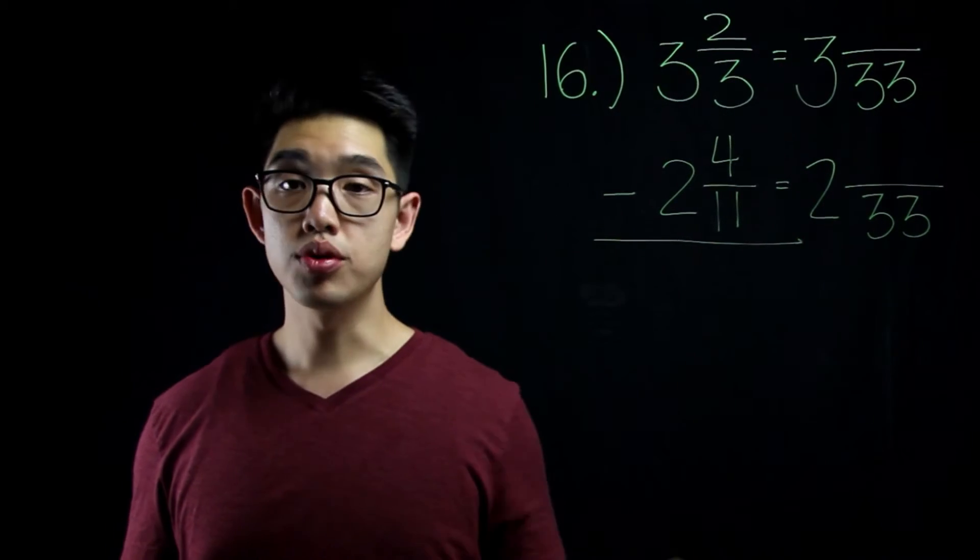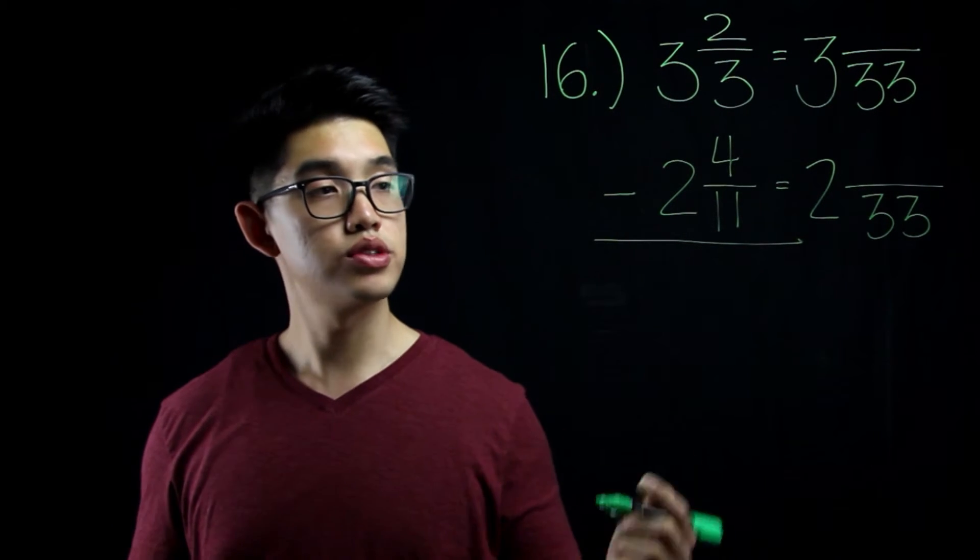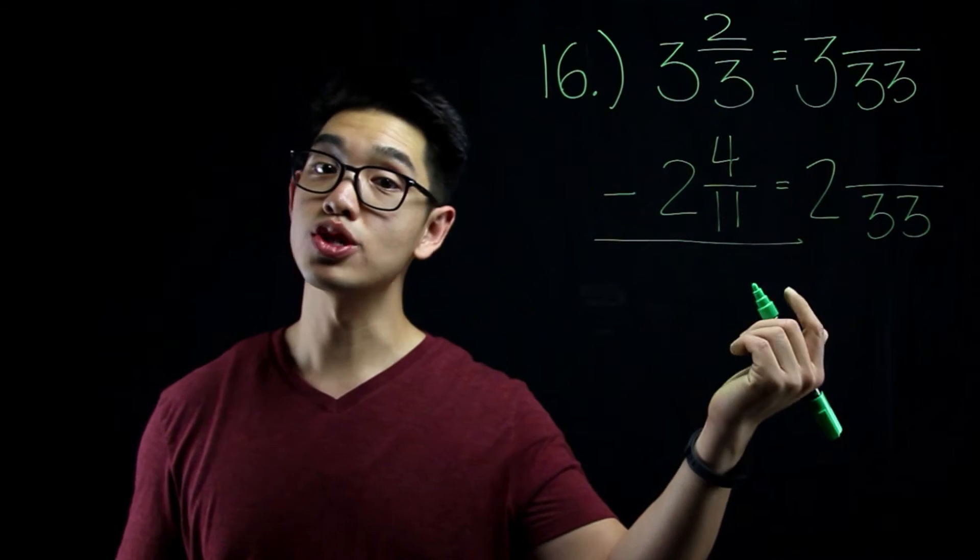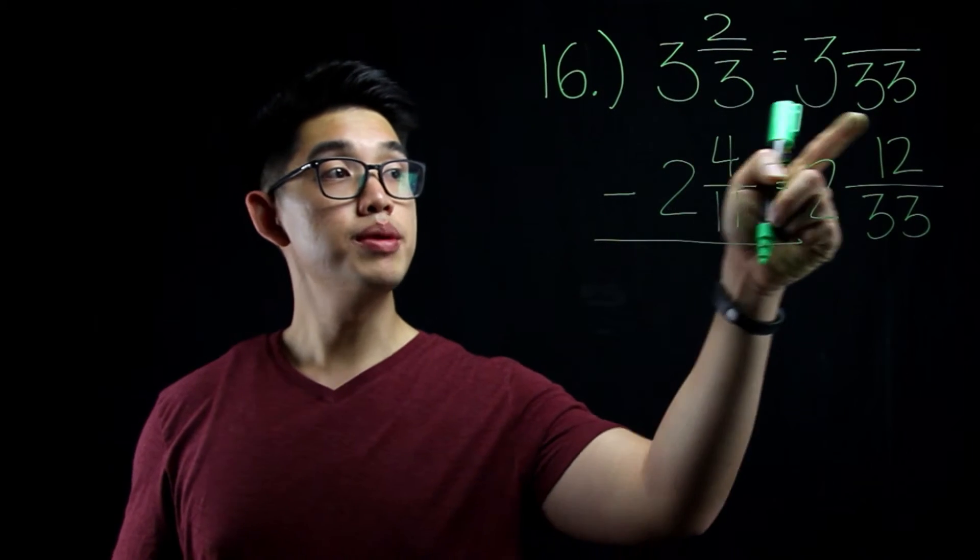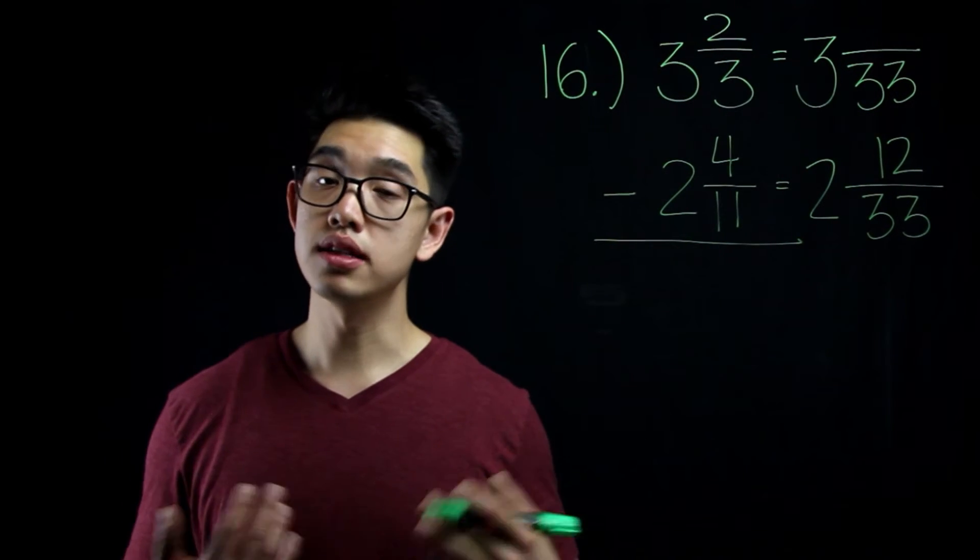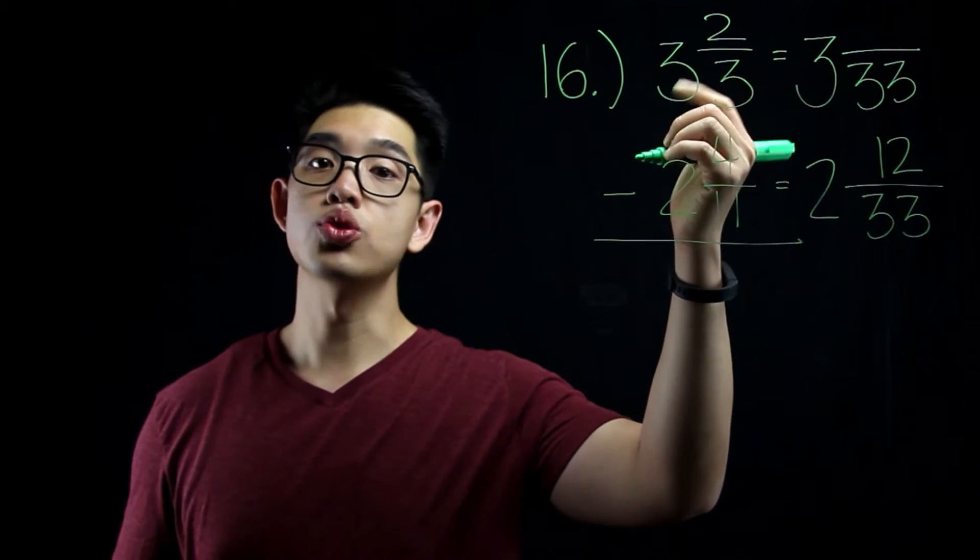Since 11 became 33 by multiplying by 3, I'm going to do the same thing to the numerator. 4 times 3 equals to 12. 3 became 33 because I multiplied the denominator by 11. So 2 times 11 equals to 22.